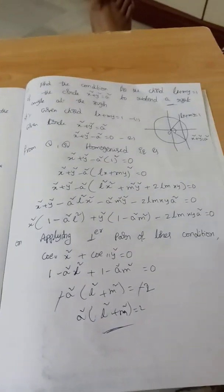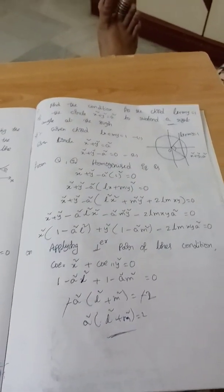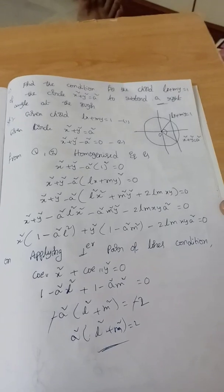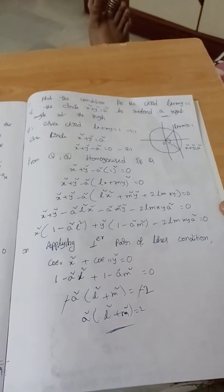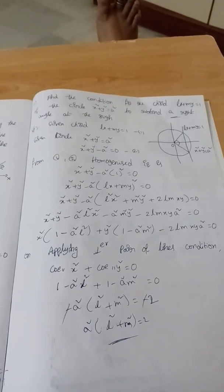Coefficient of x square plus coefficient of y square equal to zero. Apply them. This is the most important question and one more model, rectangle at the origin.